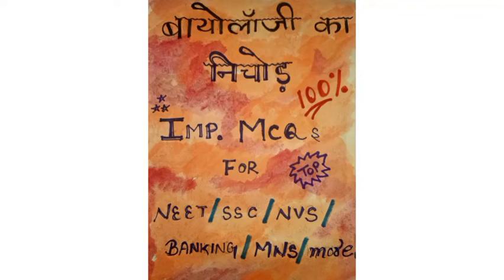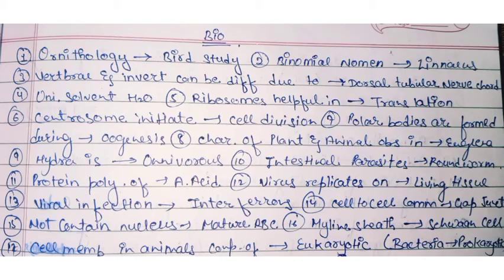Hello friends, today I am here with important subject with important MCQs. First we start from ornithology — it is a term used for the study of birds, meaning to study the behavior of birds. Then binomial nomenclature, which was discovered by Carolus Linnaeus.